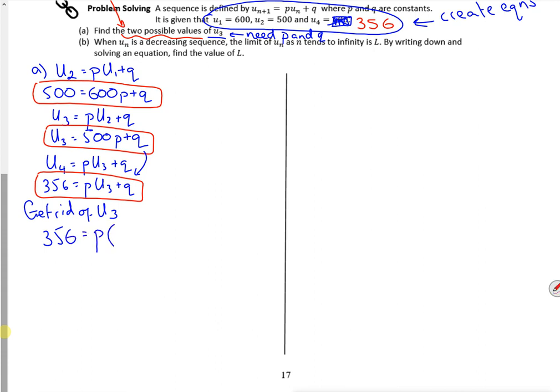So I'm going to get rid of the u3 and that's 500p plus q. You have to watch me make sure I get this right, plus q. So 356 is 500p squared plus pq plus q. So I've got something which is quadratic in it, haven't I? I'm getting something quadratic. So I know I'm aiming in the right way.